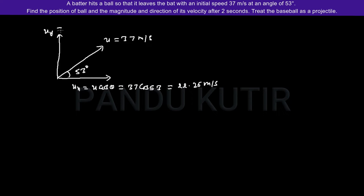Similarly for uy it is given by u sin theta. Putting the values 37 sin 53 degrees we get its value 29.54 meters per second.